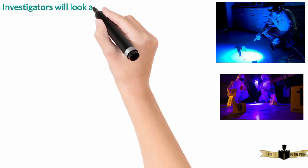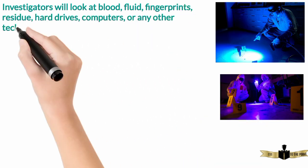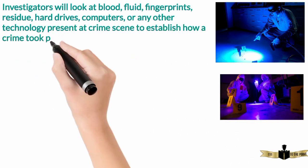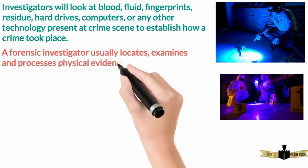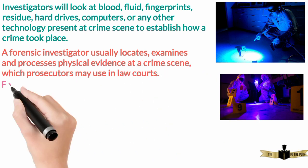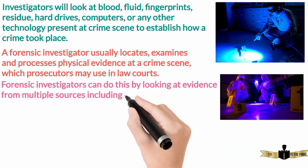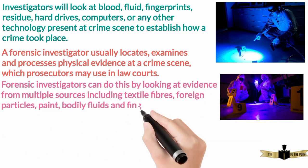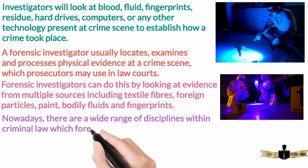Forensic investigators will look at blood, fluid, fingerprints, residue, hard drives, computers, or any other technology present at a crime scene to establish how a crime took place. A forensic investigator usually locates, examines, and processes physical evidence at a crime scene, which prosecutors may use in law courts. Forensic investigators can do this by looking at evidence from multiple sources including textile fibers, foreign particles, paint, bodily fluids, and fingerprints. Nowadays, there are a wide range of disciplines within criminal law which forensics can fall into.